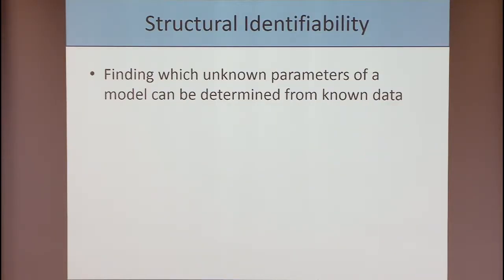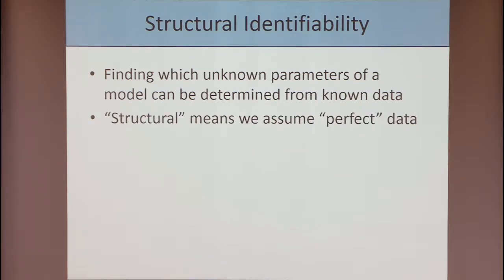I'm going to be talking about structural identifiability today. Structural identifiability is about finding which unknown parameters of a model can be determined from known input-output data. We use the word structural here, which basically means we're assuming we have perfect data — noise-free and of any time duration required. This is as opposed to what's often called numerical or practical identifiability, which is actually the parameter estimation problem when you have real and often noisy data.